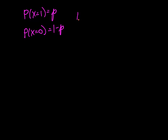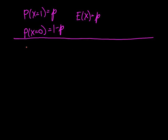We calculated that the expectation of this random variable is p. Here we're going to compute the variance and then take the square root to get the standard deviation. The variance is the expectation of x minus the mean squared, or the expectation of x squared.